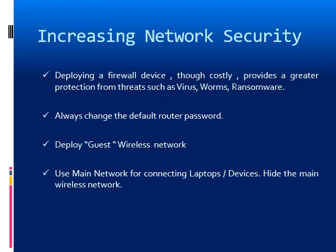We have now come to the end of network improvements. I would now share some tips to improve network security. Deploying a firewall device, though expensive, is the best way to protect the network against threats such as computer viruses, worms and ransomware. Changing the default password of the router is also a must. For wireless connections, deploying a guest network for devices that require only internet access, and hiding the main wireless network, are the two key steps.